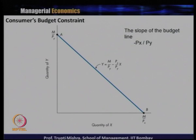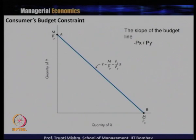In the graphical representation of the budget line, we represent it as line A to B. At point A on the Y-axis the value is M/Py, because the entire money income is spent on consumption of one good only. Similarly, at point B on the X-axis the value is M/Px, where the entire money income is spent on the consumption of good X.